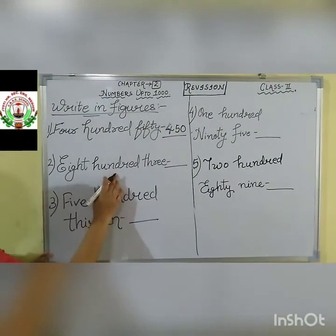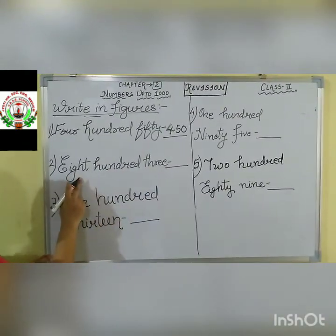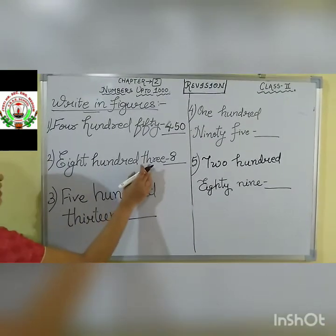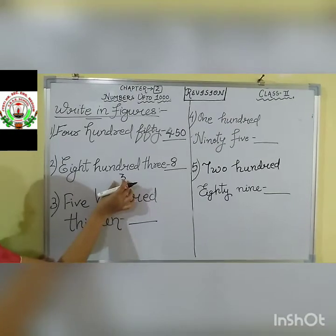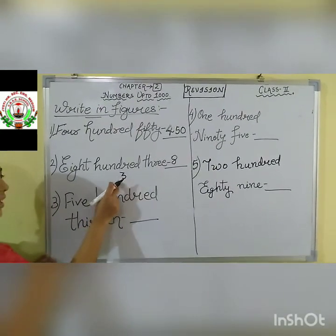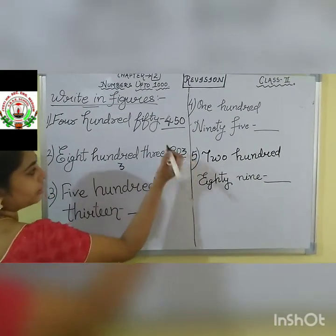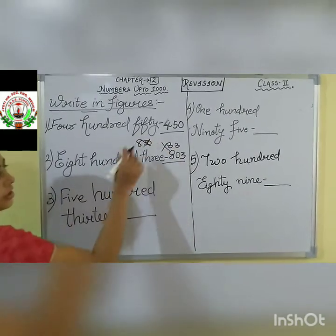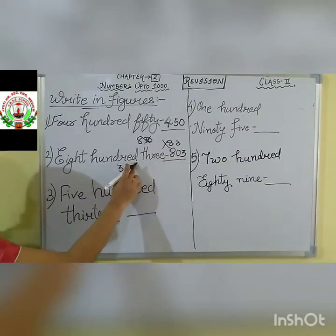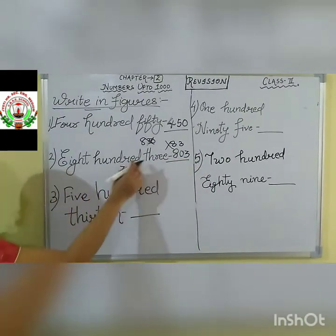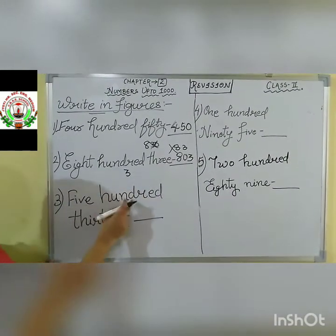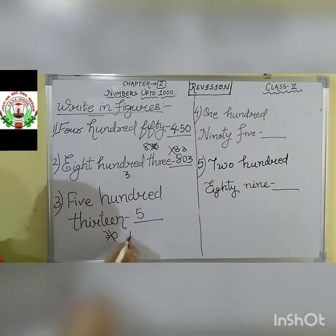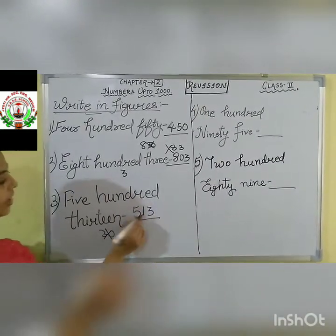Next question: eight hundred and three. First, what is the spelling given? E-I-G-H-T — 8. So 8 we will write down as the first number. Then hundred. In the 10's place, put 0. Then 3 is given, so write down 3. Our answer is 803. Next: five hundred and thirteen. Write 5, then hundred. Together 10's and 1's place: 13 — write 1-3 as thirteen. Our answer is 513.